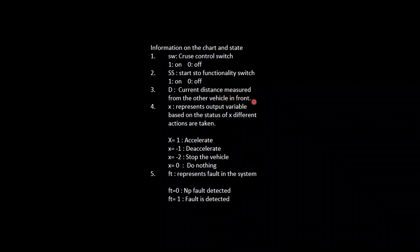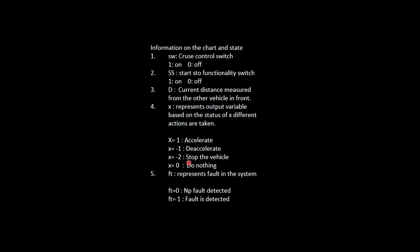D is the distance measured with the help of sensors present in the car — this can be considered as the distance between our car and another car. X represents the output state variable of different statuses from our state space model. If X equals 1 then we are accelerating; when X equals minus 1 we are using the deceleration mode; when X equals minus 2 the vehicle will stop; and when X equals 0 it is doing nothing.